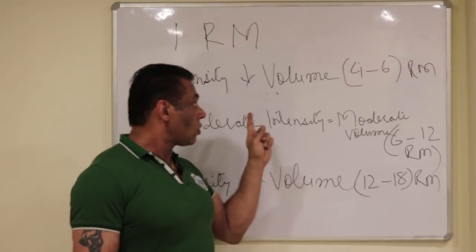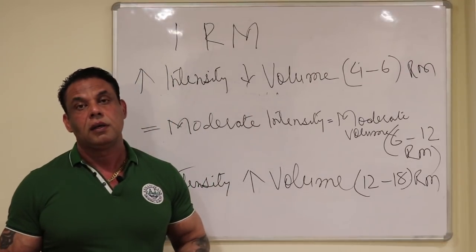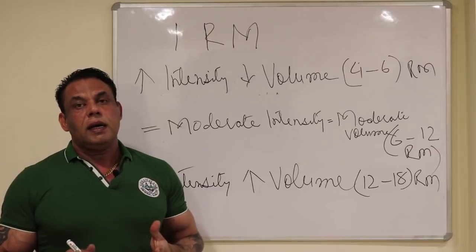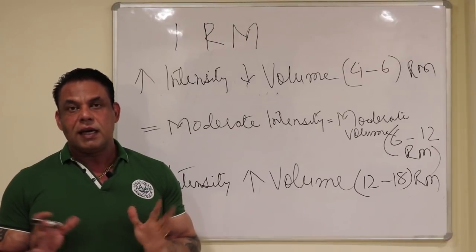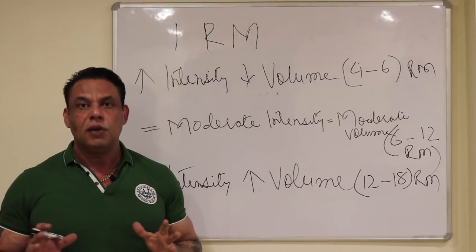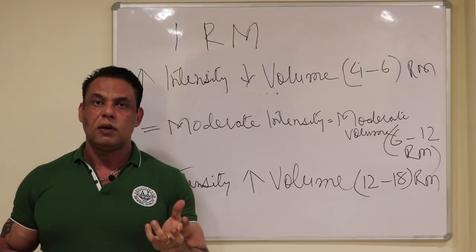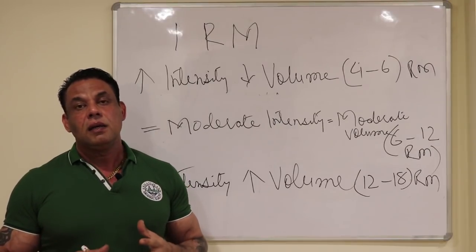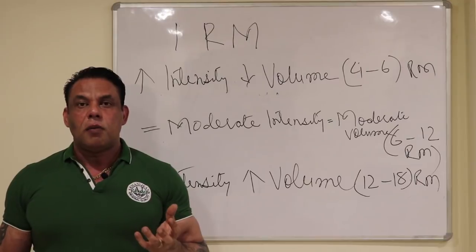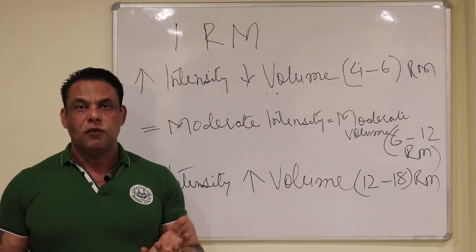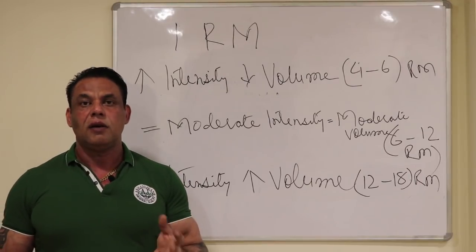This overcompensation is also called myofibril hypertrophy. Myofibrils, which are muscle cells, which contain contractile proteins in the form of actin and myosin, which are responsible for contraction and relaxation of the muscle cell.